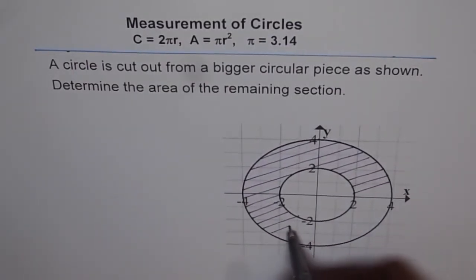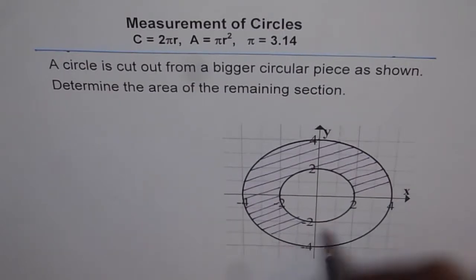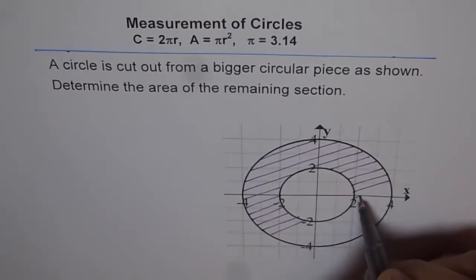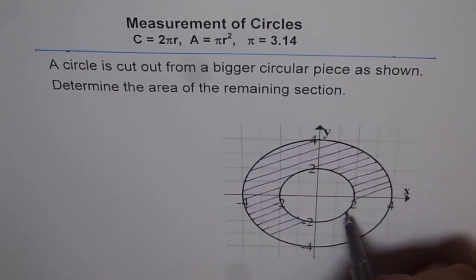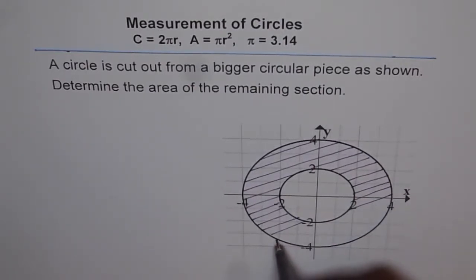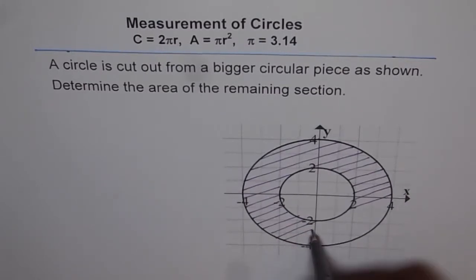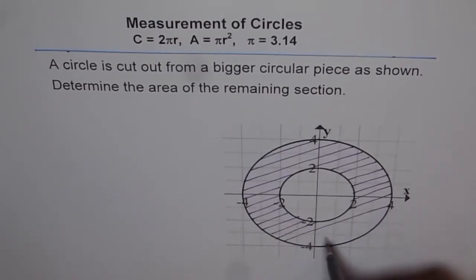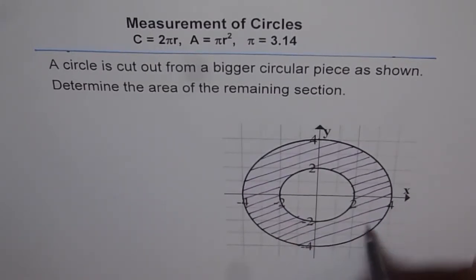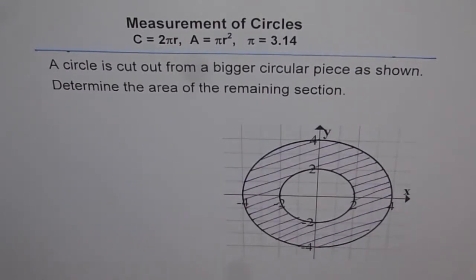The easy way is: first find the area of the outer circle, then find the area of the inner circle, and subtract the area of the inner circle from that of the outer circle to get your answer. So let's do that.